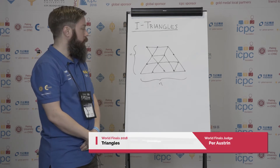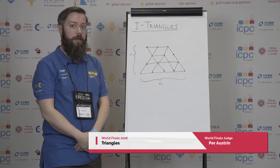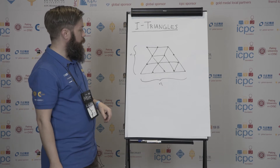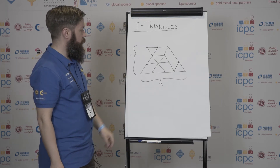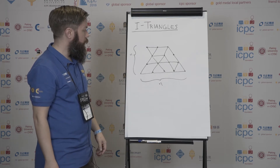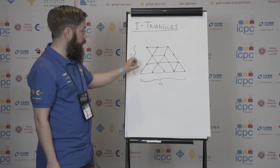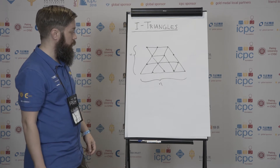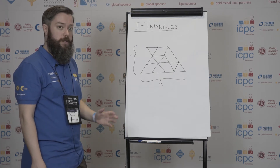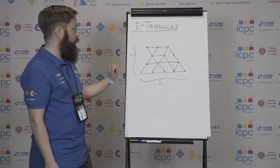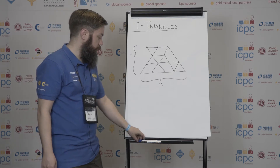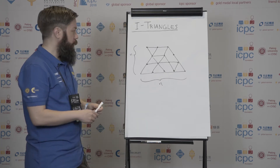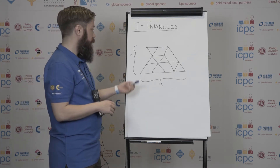This is a solution presentation for problem I, triangles. In this problem we're given a triangular grid with some lines existing and some lines not existing, and our goal is to count the number of triangles appearing in this grid, which is a classical puzzle — but now we want to do it algorithmically.